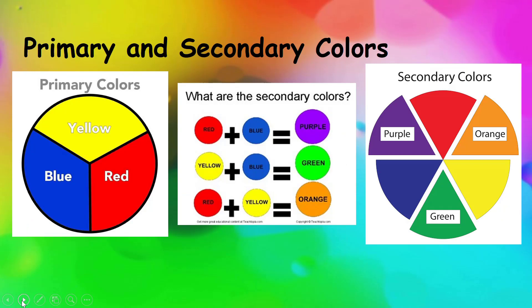The primary colors red, yellow, and blue are the three most important colors because they make all the other colors on the color wheel.